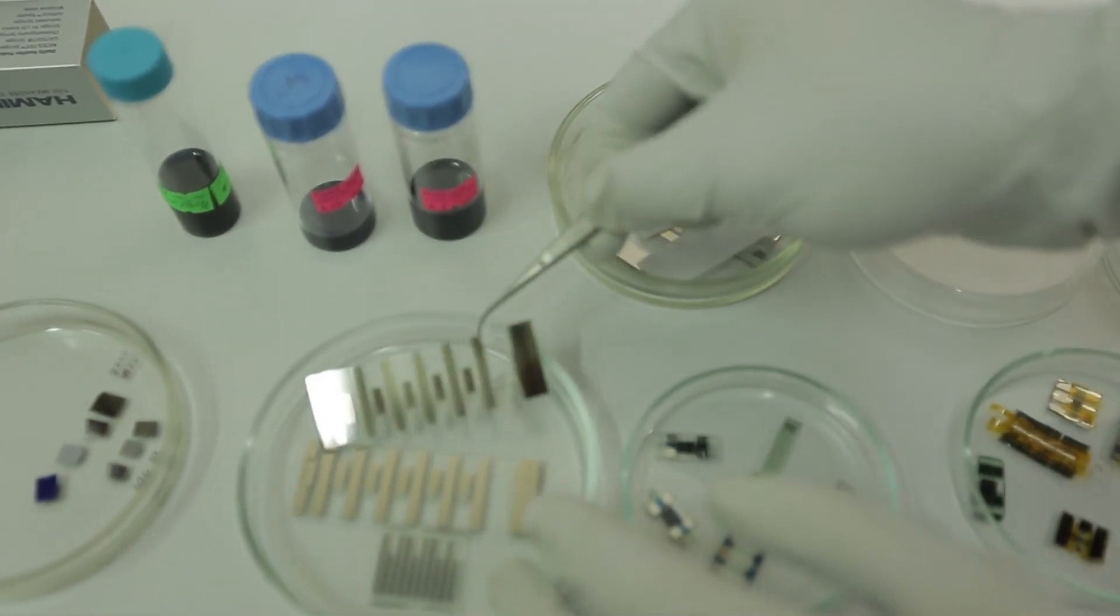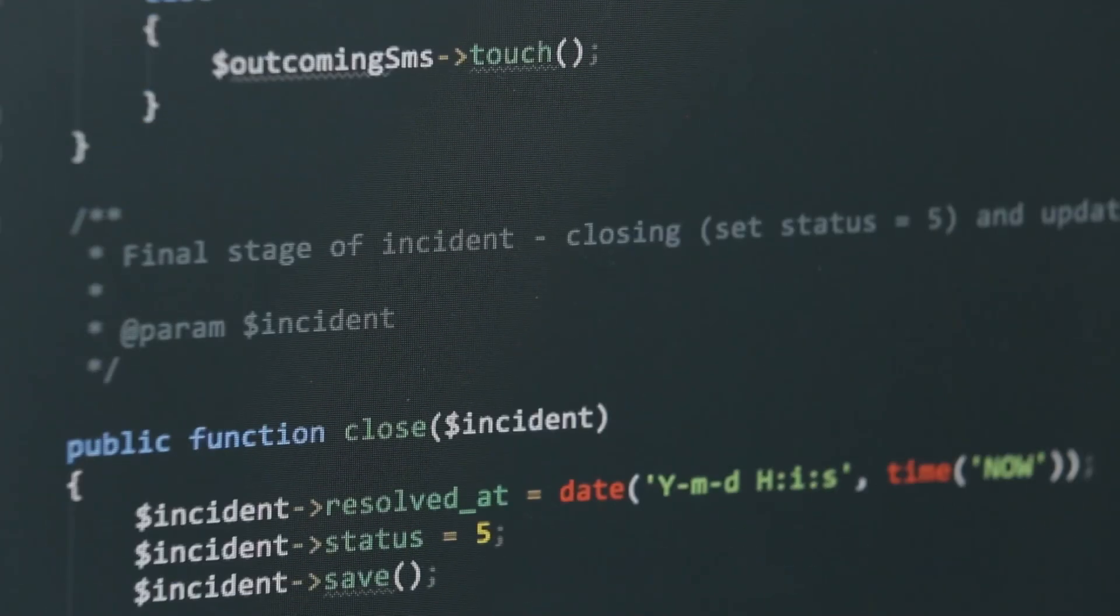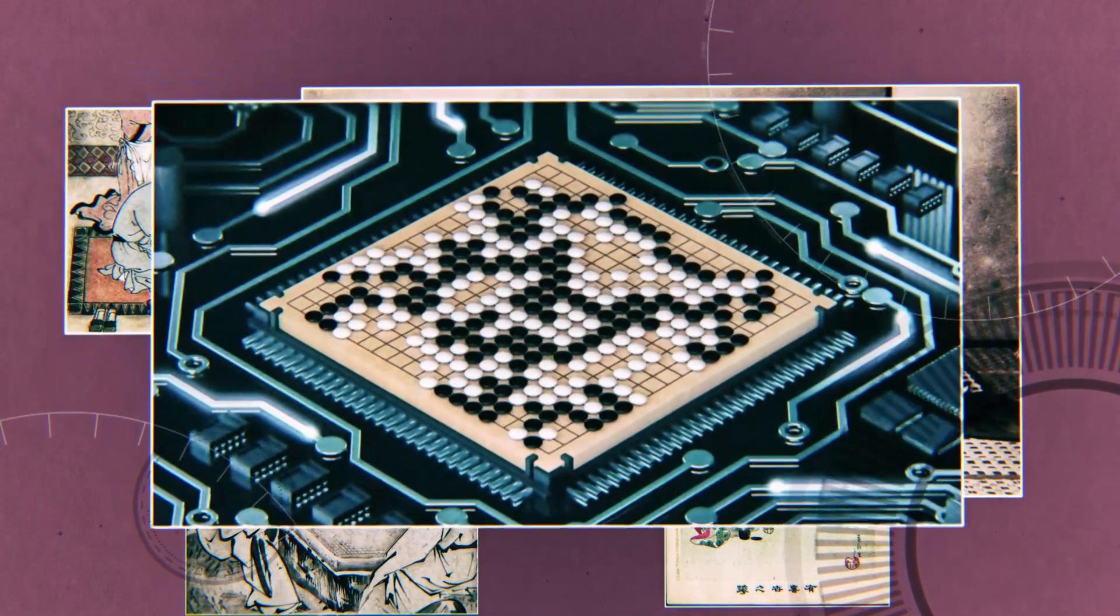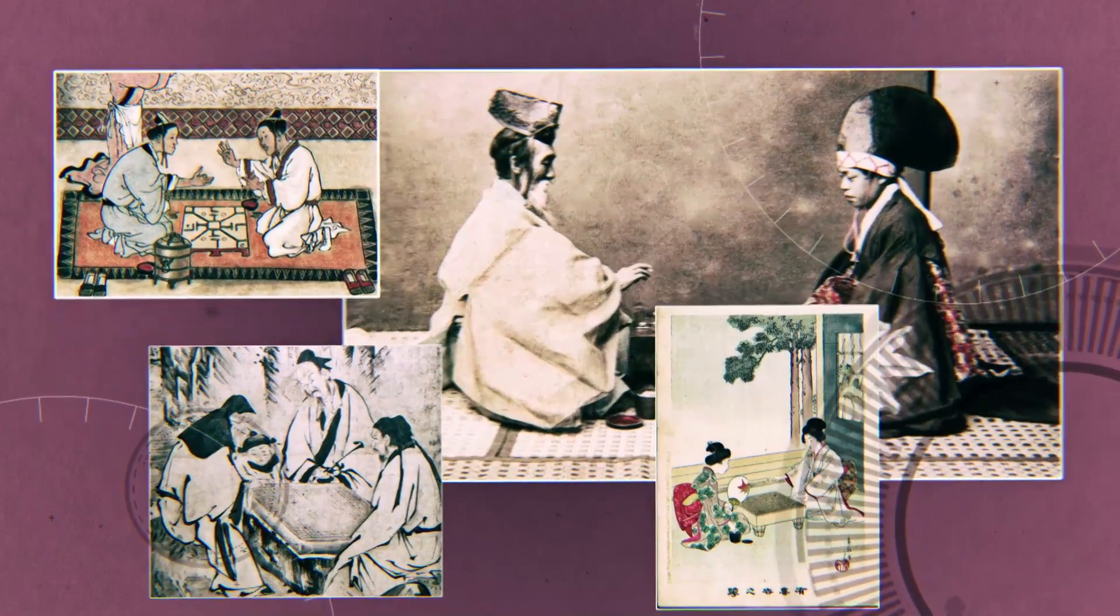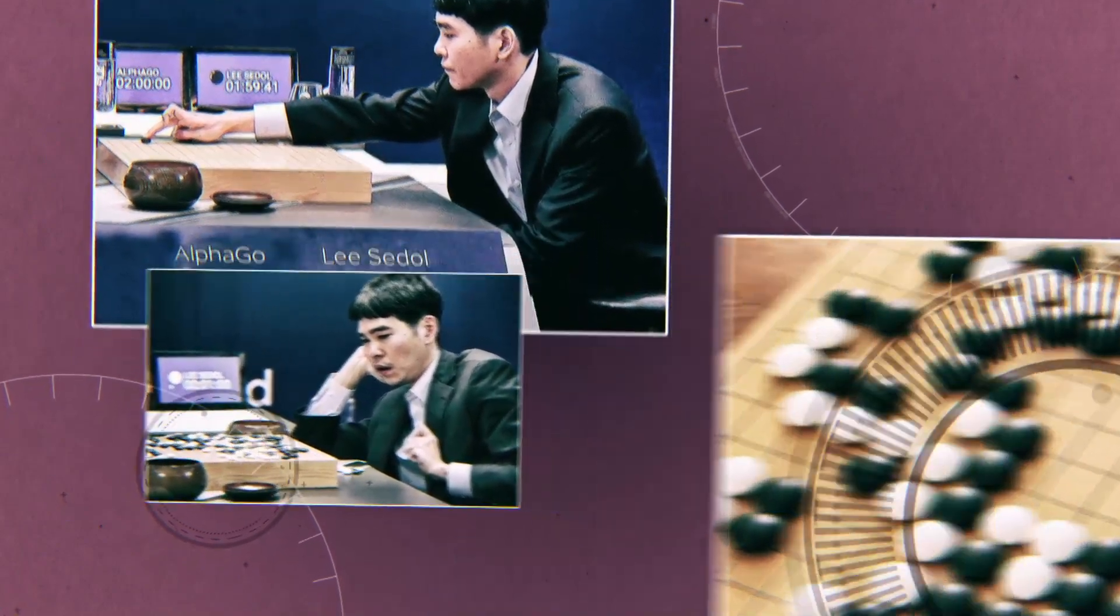The computer already secures confident victory over man in checkers, chess, and Go, a table game that was considered to be beyond artificial intelligence's capacity. Logical thinking alone is not enough to win a game of Go. The players have to use their intuition, and it seemed that the computer has no intuition. Therefore, its victory wasn't expected.